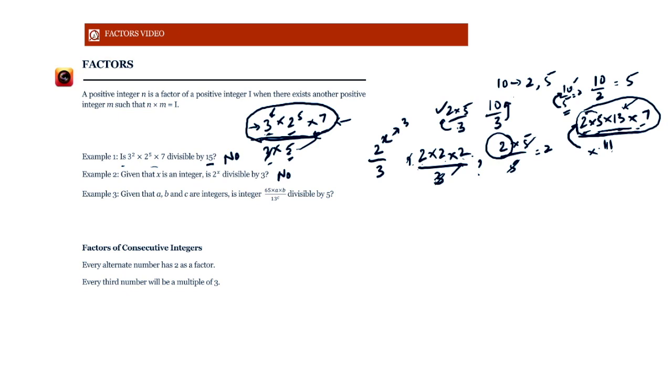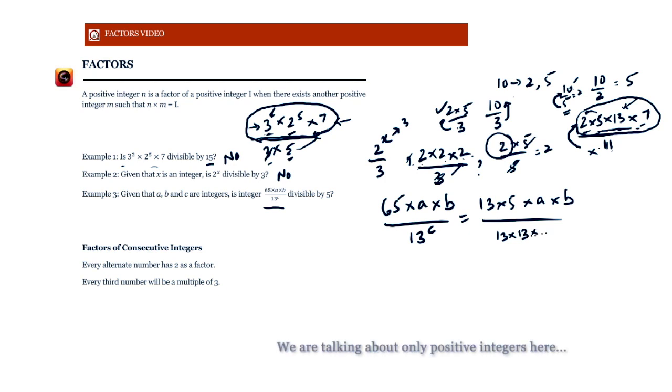Given that a, b and c are integers, is this an integer? Let me write down 65 into a into b upon 13 to the power c. Is this divisible by 5? So first of all, this is an integer. What does this mean? 65 is 13 into 5 into a into b upon 13 to the power c. So there'll be a few 13s depending on the value of c. We don't know what it is. It doesn't matter. So of course, one of the 13s will get cancelled.